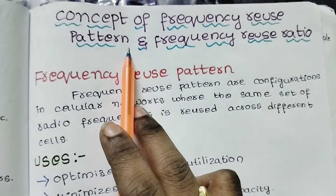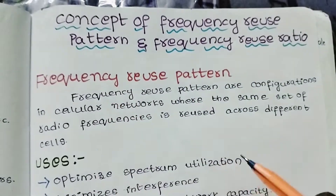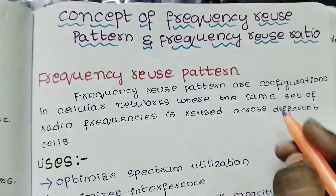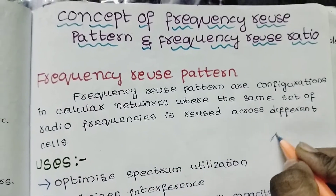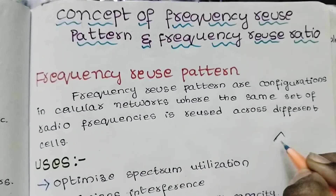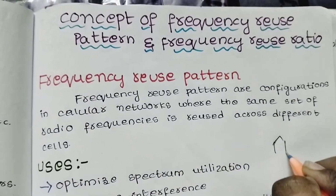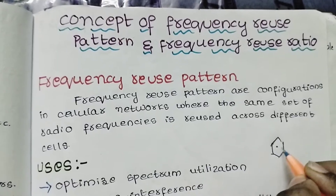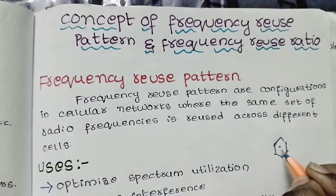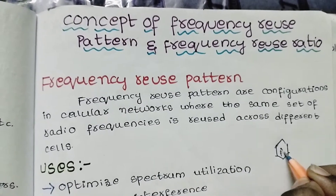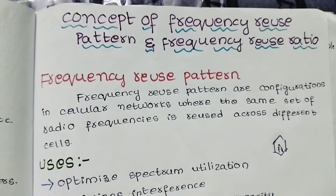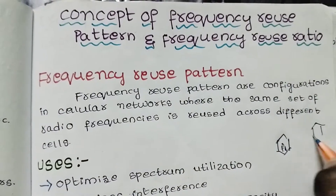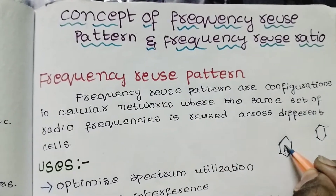Frequency reuse pattern is a cell that has a frequency. We will repeat the other cell that has a frequency. Here we have a cell, and in this cell we use the same frequency.